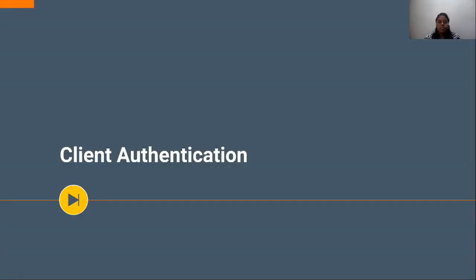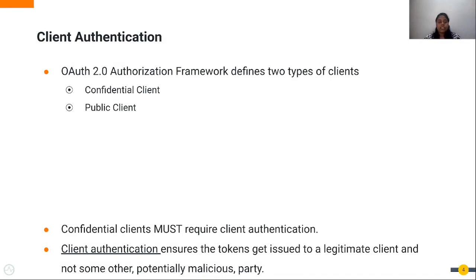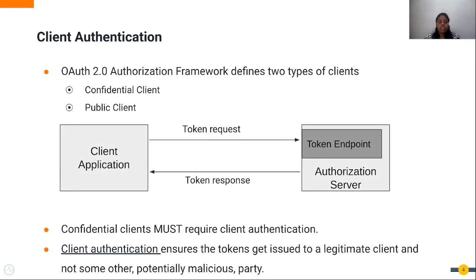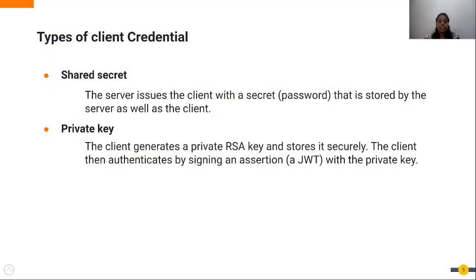First we will discuss client authentication. Clients can be considered as confidential clients or public clients as per the OAuth specifications. When a client application tries to invoke a token request to the token endpoint, it will receive a token in response. If the client is a confidential client, it must require client authentication to ensure the token is issued to the legitimate client and not shared with any malicious parties.